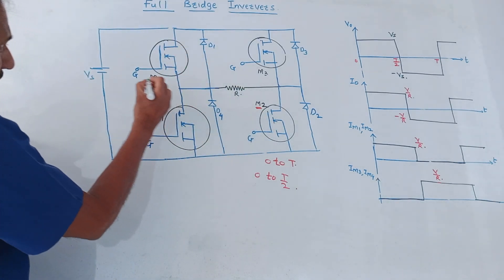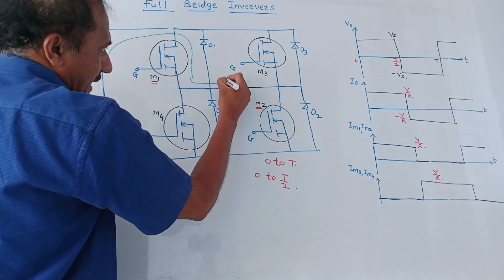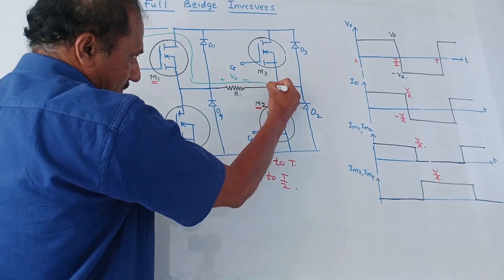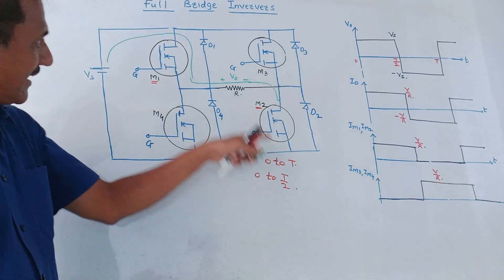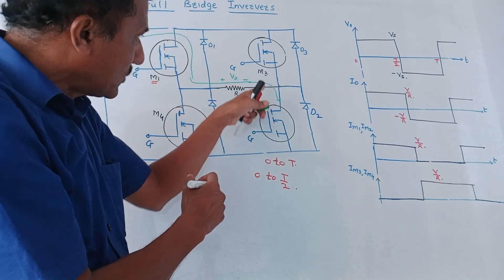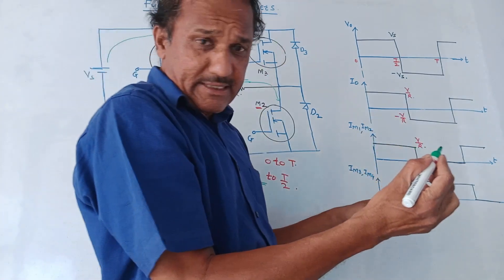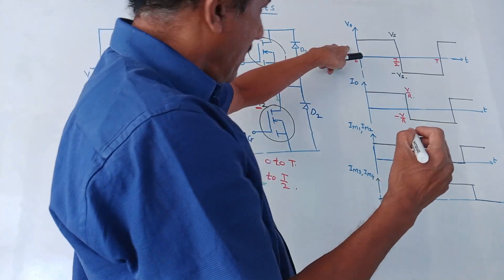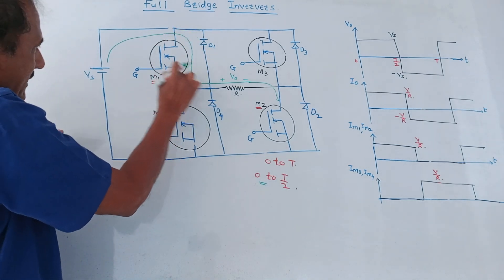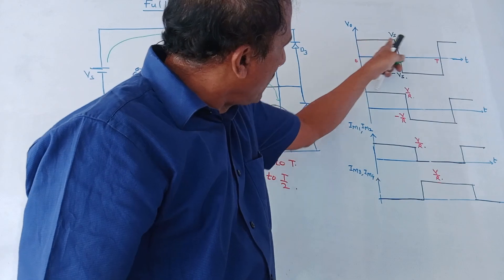M1 and M2 are switched on, so naturally the flow of current will be through resistance R. Here the plus-minus polarity will be measured as output voltage. M3 and M4 are open circuited, so current flows through M1 and M2, through the load. The output voltage is V0 and the corresponding output current is I0. During 0 to T/2, you are getting the output voltage Vs, since the MOSFET is closed and acting as a short circuit — so voltage Vs is available at load resistance R.